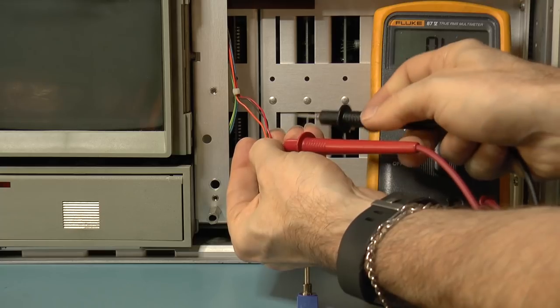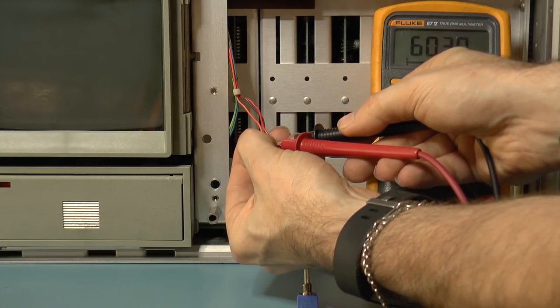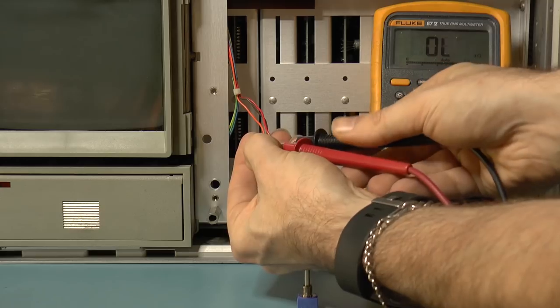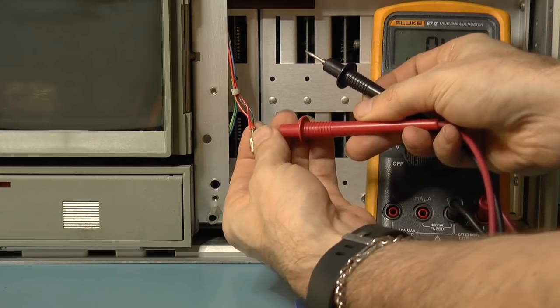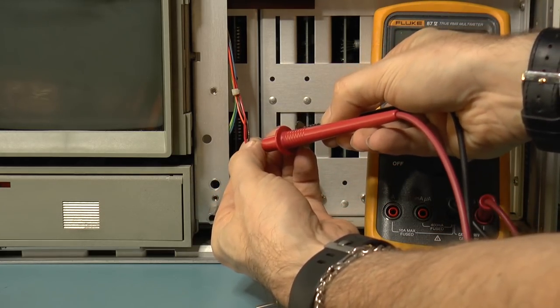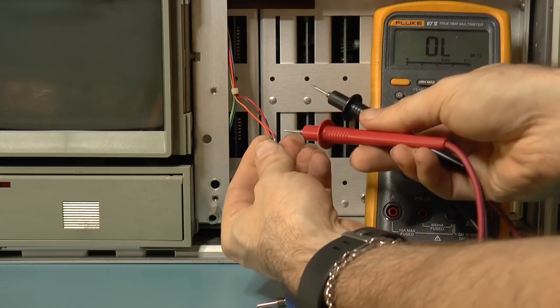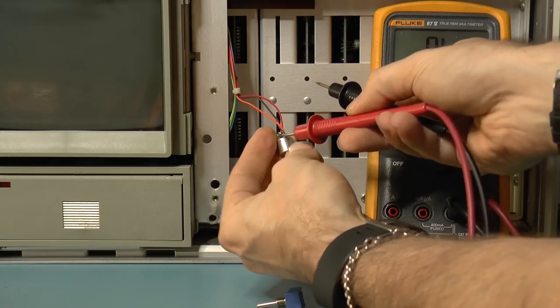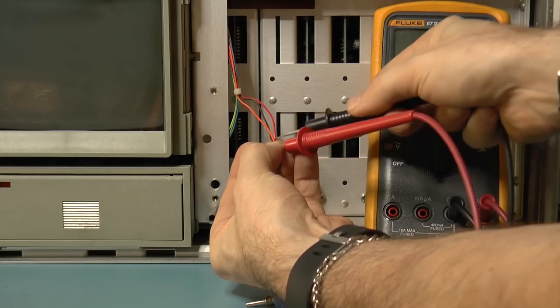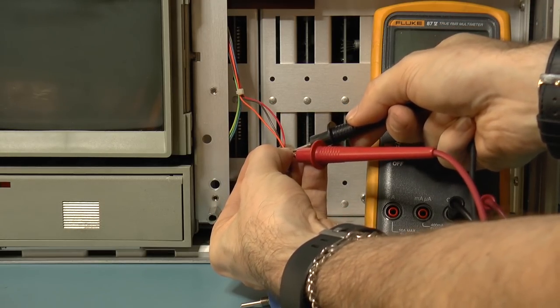So again, orange to red gives me 600 ohms. Red to brown gives me 330. So that probably means that between brown and orange, I'm going to get the measurement that I'm looking for.